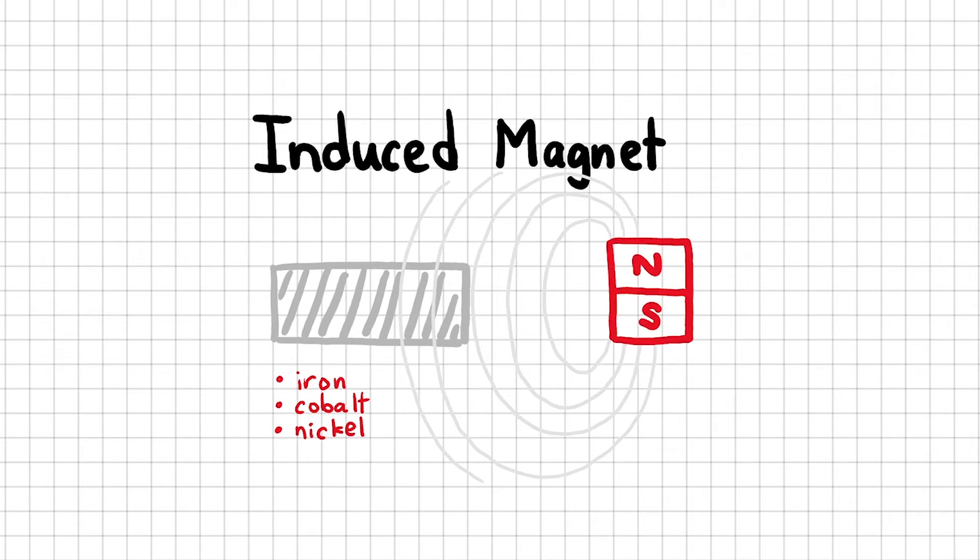So if I place a substance made of iron, cobalt, or nickel within the magnetic field of a permanent magnet, then the substance becomes an induced magnet. The induced magnet will then be attracted to the permanent magnet, but they can never repel each other.